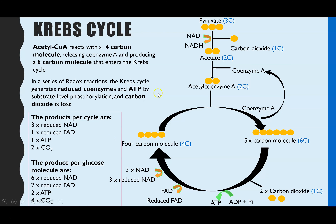Looking at the products of the Krebs cycle: for one round of this cycle we have three reduced NAD, one reduced FAD, one ATP, and two carbon dioxide molecules. However, per glucose, because we have two pyruvates we have two acetyl coenzyme A, so the cycle happens twice and we multiply all of those by two. This gives us our subtotal of all the products from this stage.